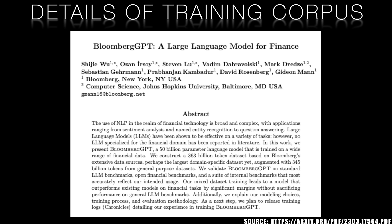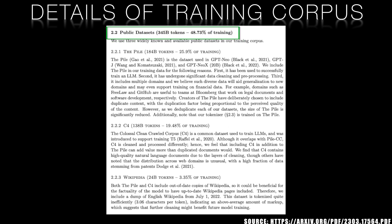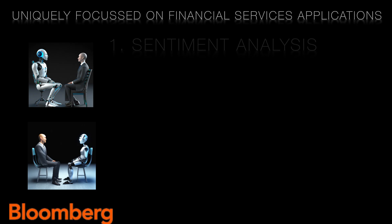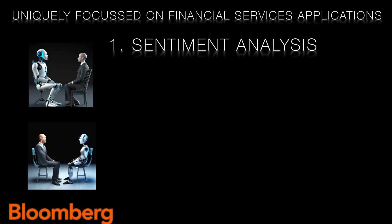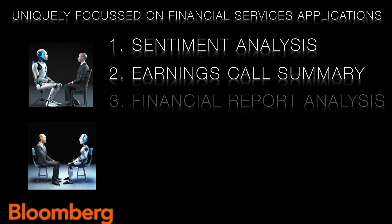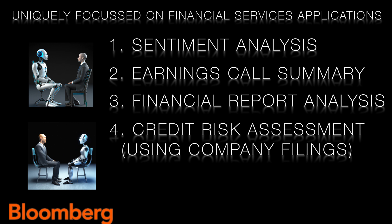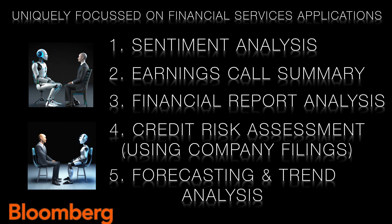Another important aspect of Bloomberg GPT's design is the focus on domain-specific data. The model has been trained on a massive 700 billion token corpus, which combines Bloomberg's proprietary 363 billion token dataset with a 345 billion token public dataset. This unique combination of data sources ensures that Bloomberg GPT is not only well-versed in general language, but also deeply knowledgeable about financial topics, terminology, and trends. This domain-specific expertise is crucial for effectively addressing the unique challenges of the capital markets industry.